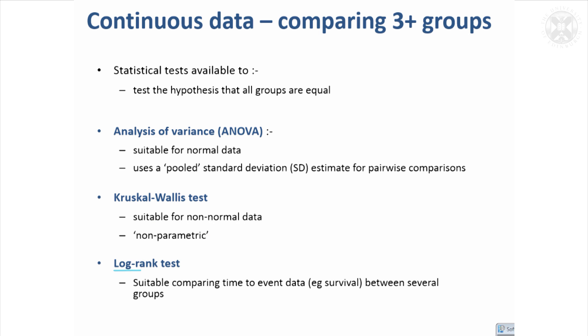The log-rank test I briefly mentioned for survival data is also appropriate if you've got three or more groups. It can cope and it will test the null hypothesis that there's no difference between the groups, so if you've got time to event or survival data.